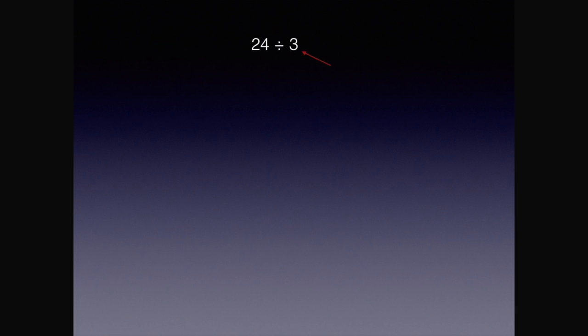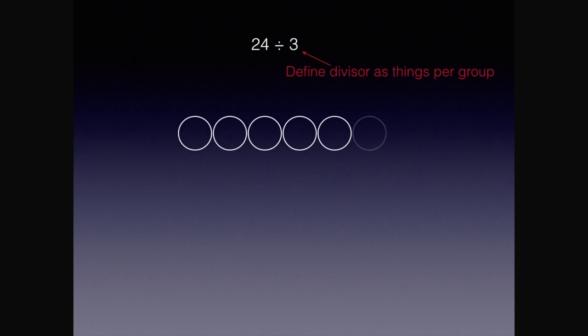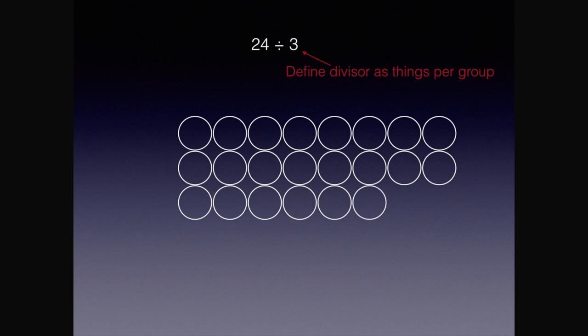The first way we will show this problem is by defining our divisor as a number of things per group. We have to make groups of 3 until we get a total of 24 because that is what our dividend is. We're done dividing when the dividend has been completely divided.